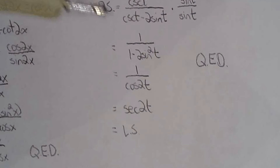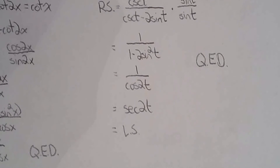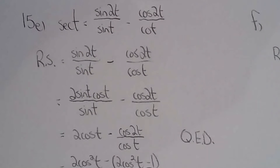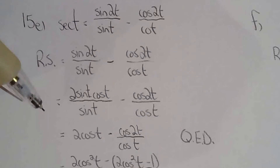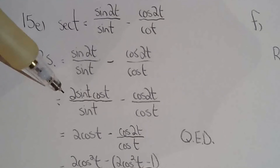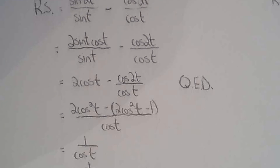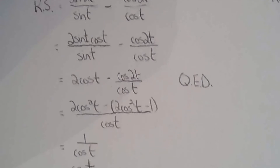Applied the double angle formula, got secant 2t — done. For 15e, definitely work with the right-hand side. After a double angle formula for sine, just simplify — not much more to say.